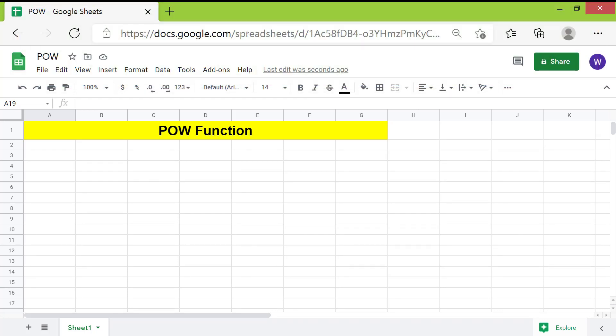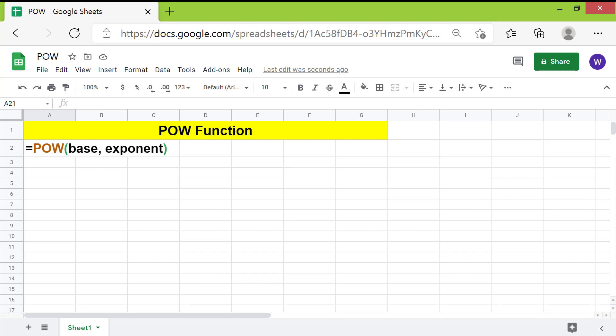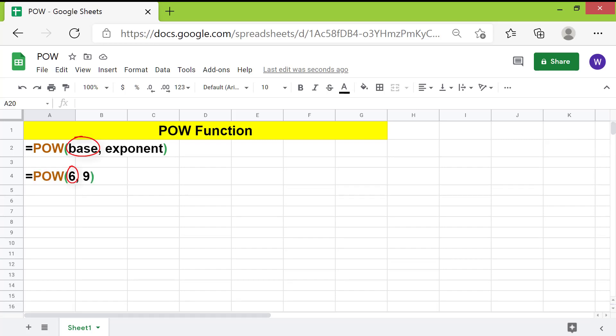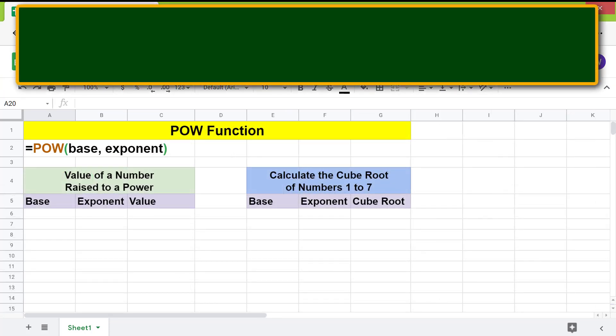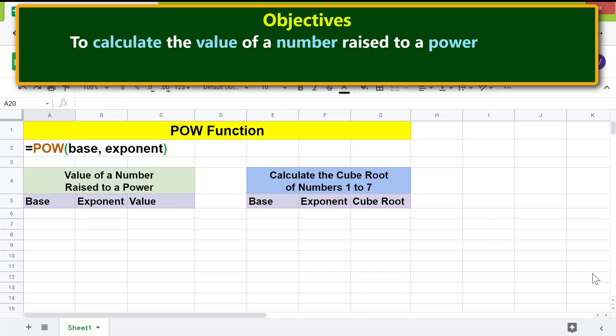Here is an example. Base is the number to raise to the exponent power. Exponent is the number by which to raise the base. Here are the objectives of using the power function: to calculate the value of a number raised to a power, and to calculate the cube root of numbers 1 to 7 using shortcuts.